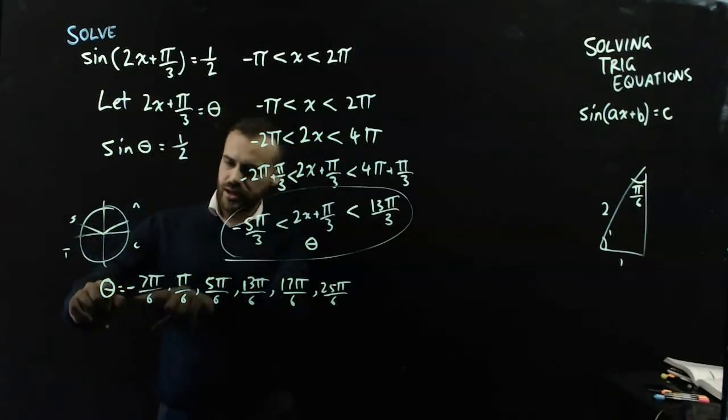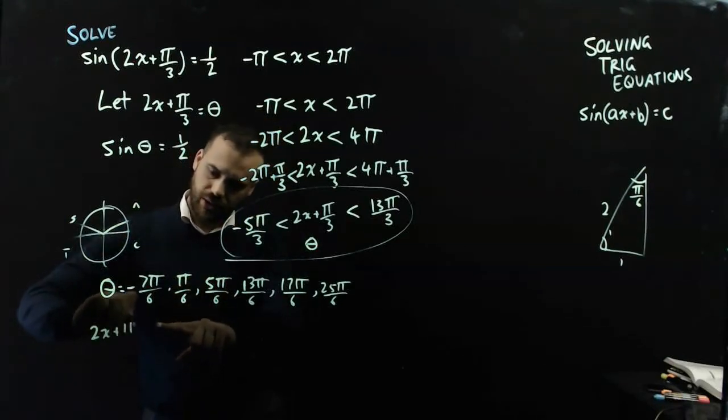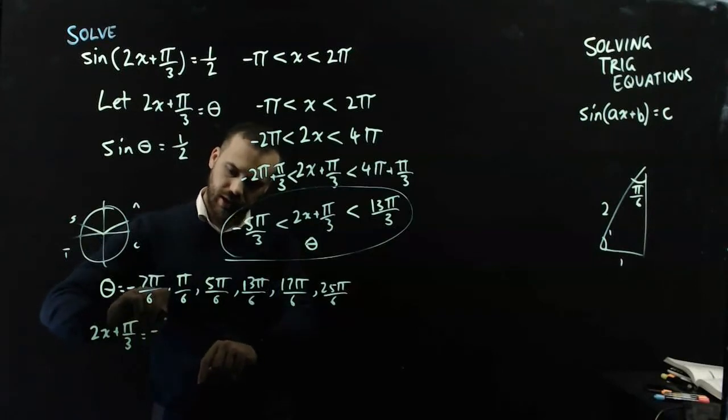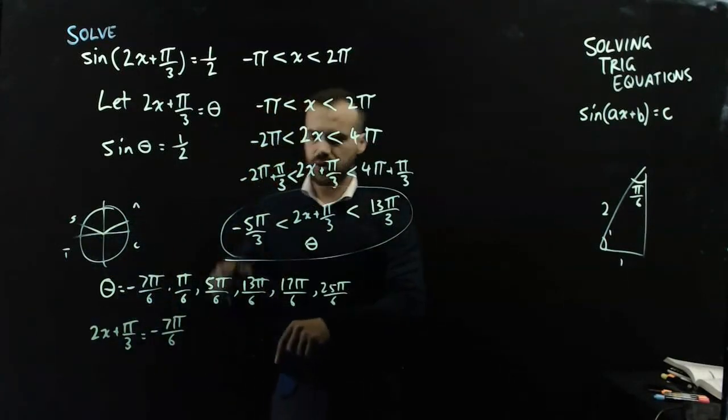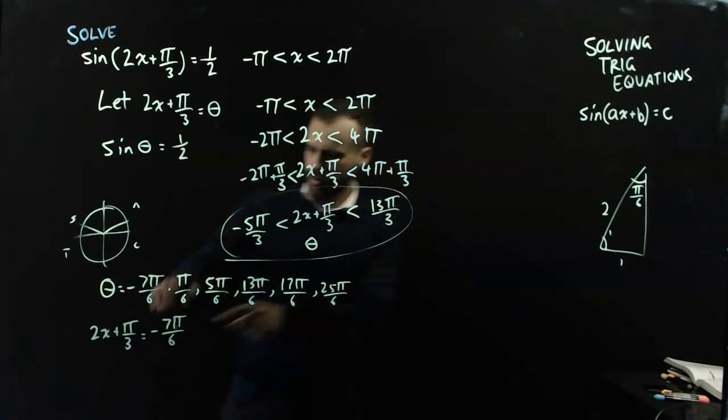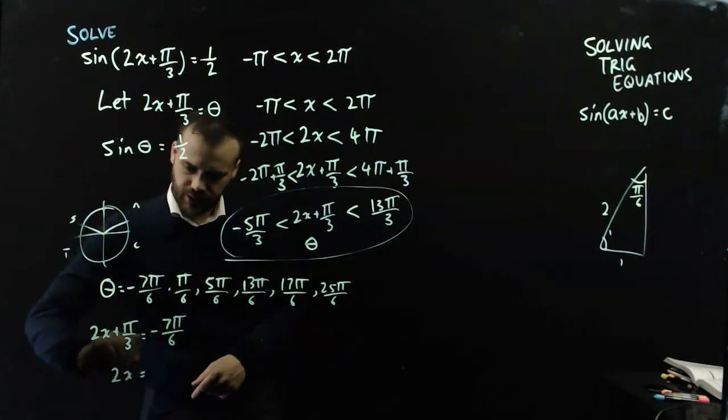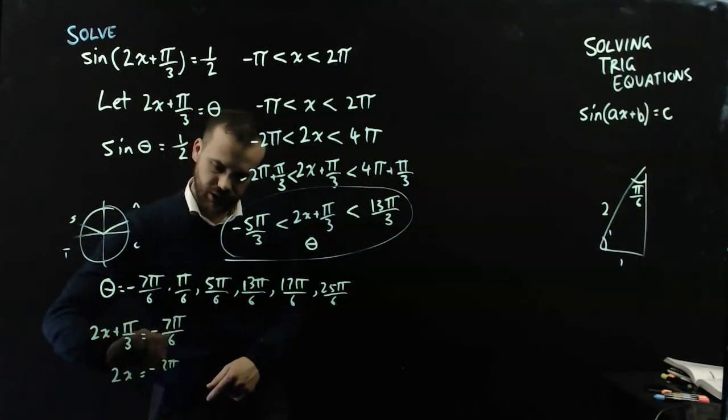So if theta equals negative 7pi on 6, then 2x plus pi on 3 equals negative 7pi on 6, or pi on 6, or 5pi on 6, or 13pi on 6, or this one, or this one. Alright, let's just solve this first one here.